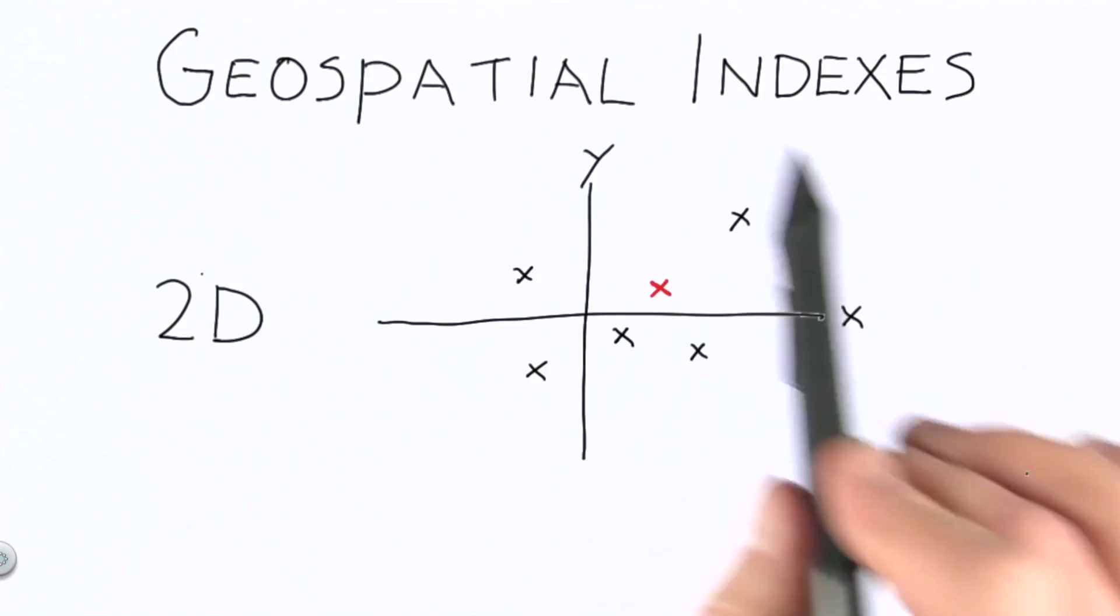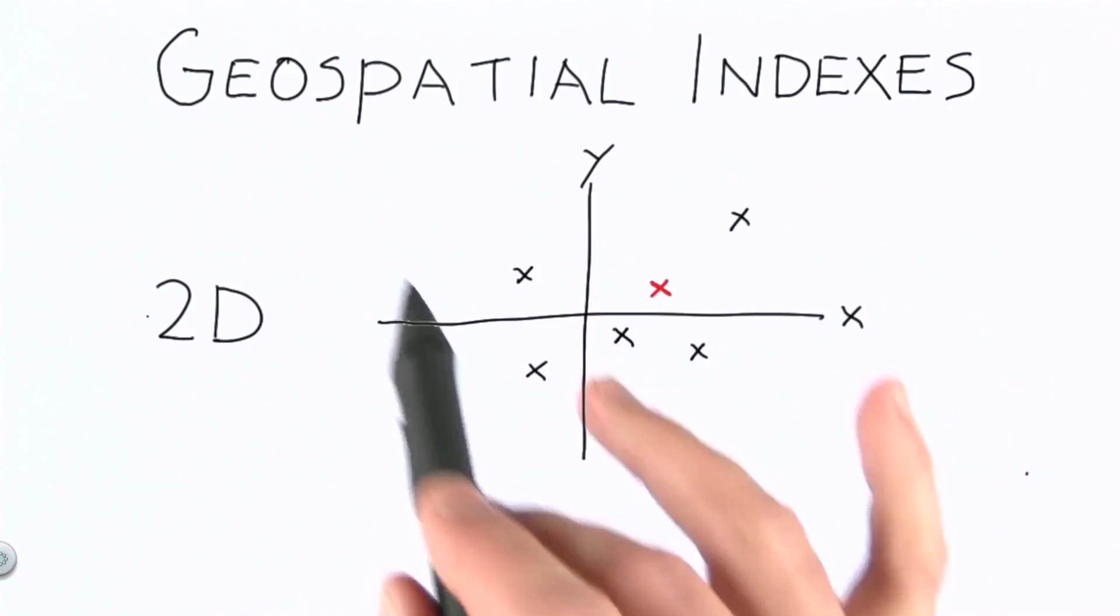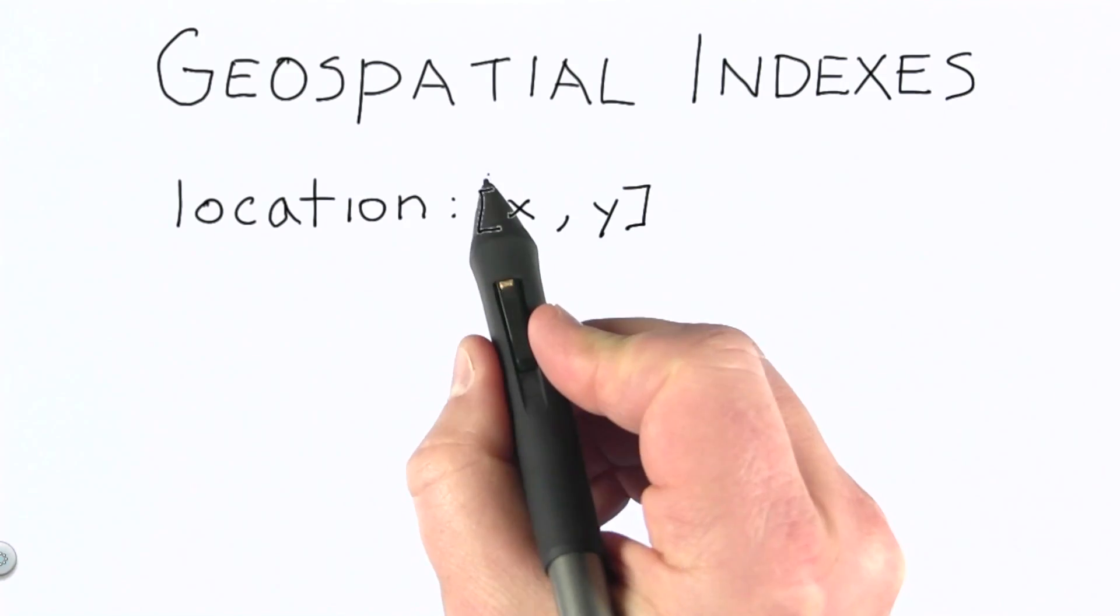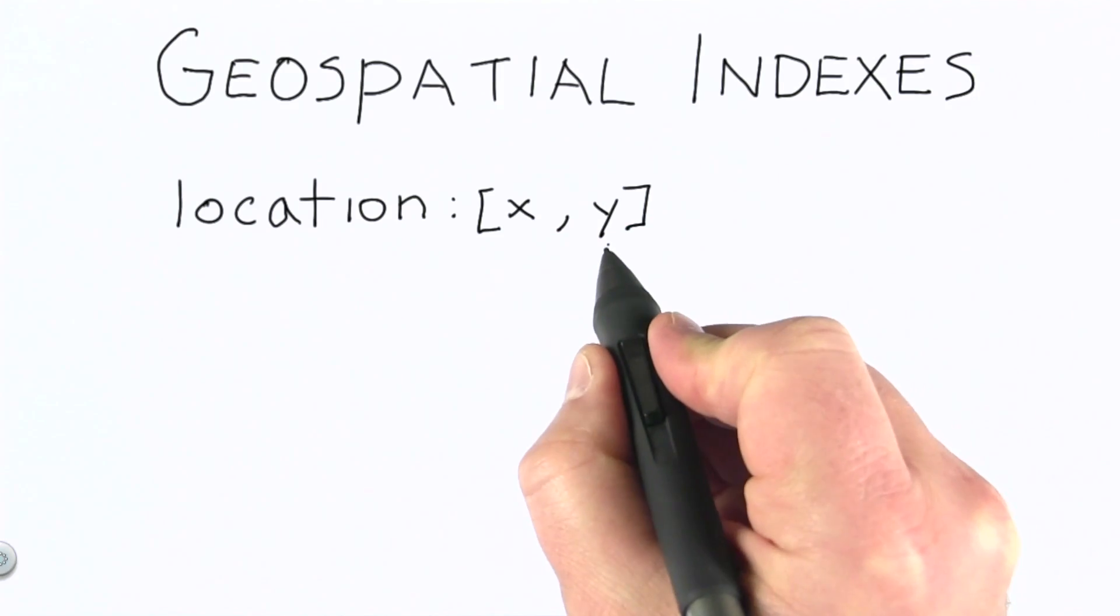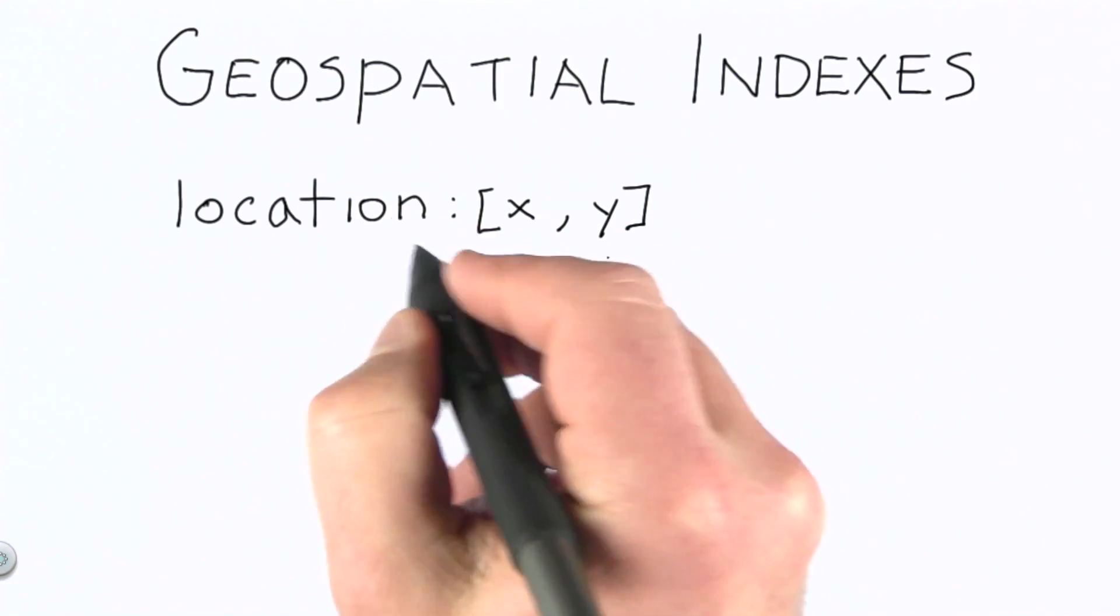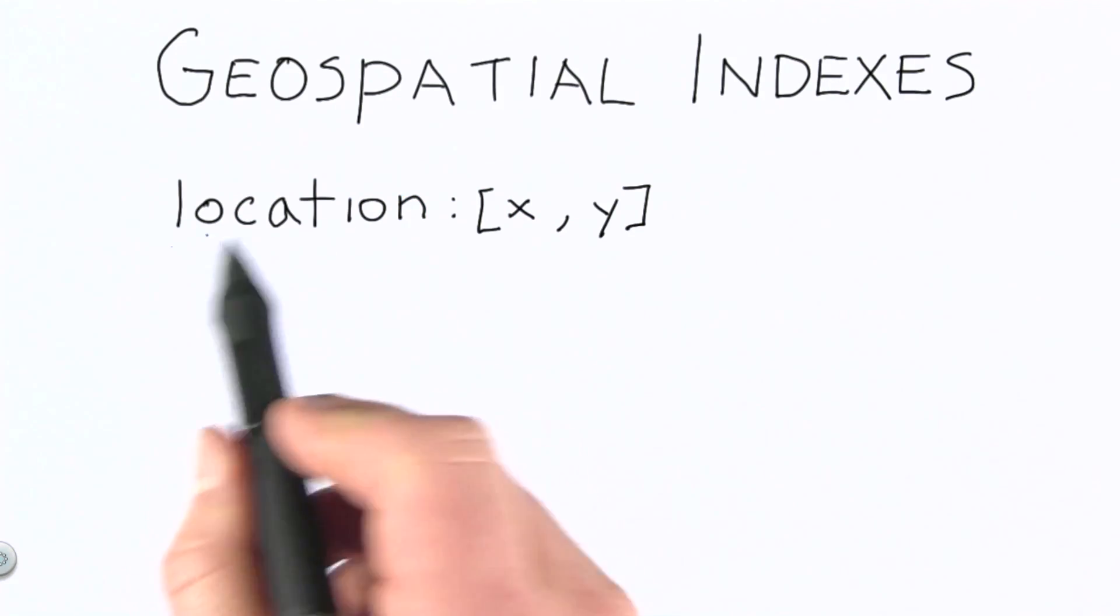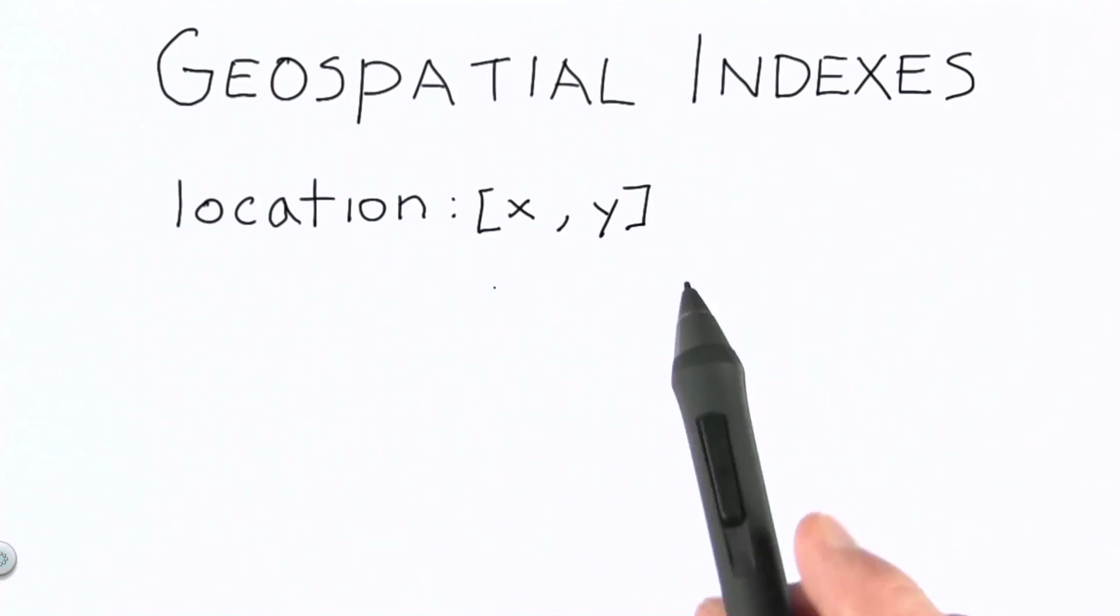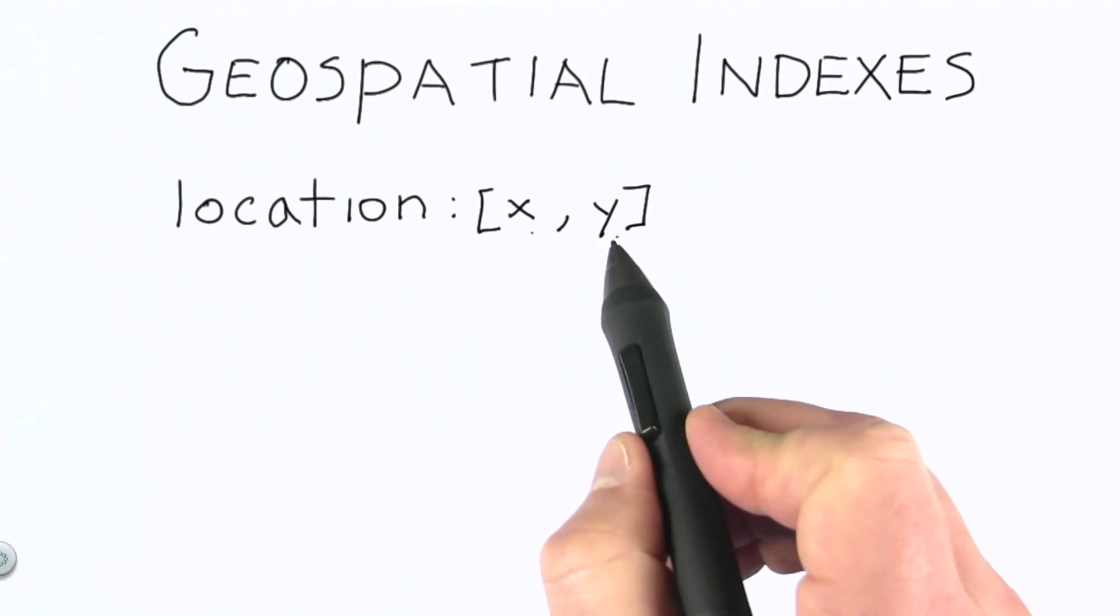There's essentially three things you need to know about in order to construct a geospatial index in MongoDB. The first is that you need a field that holds a location. The location needs to be stored as an array with first an x value and then a y value. You can name this field whatever you want. I've just chosen the name location here. It could be loc or position, point, anything you like. But it does need to follow this form of having the x value first and then the y.